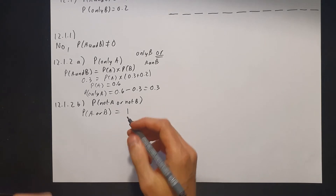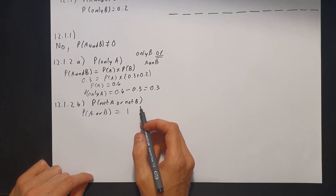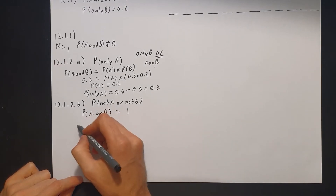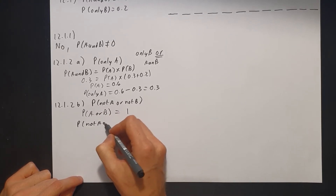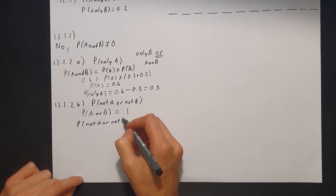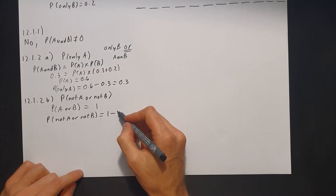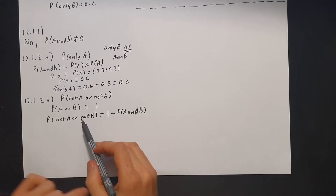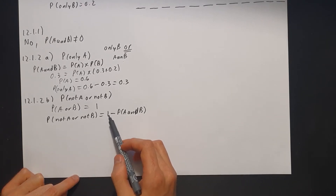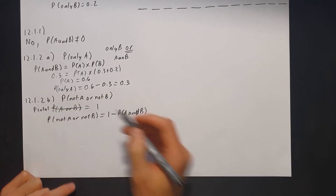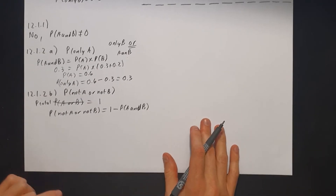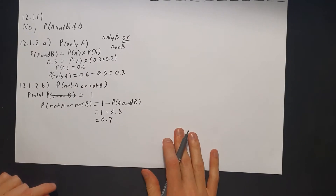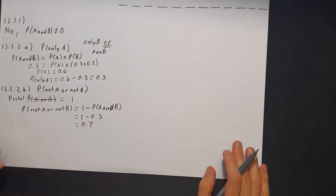If we have not A happening and not B happening, and we have the probability of A and B happening, we can use the following: the probability of not A or not B equals the total probability minus the probability of A and B happening together. So that's 1 minus 0.3, which gives a probability of 0.7 that not A or not B is going to happen.